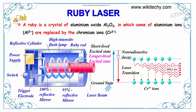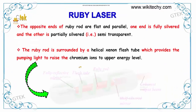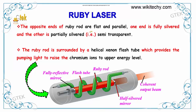A ruby is a crystal of aluminum oxide in which some of the aluminum ions are replaced by the chromium ions. The opposite ends of the ruby rod are flat and parallel. One end is fully silvered. The other end is partially silvered — semi transparent.